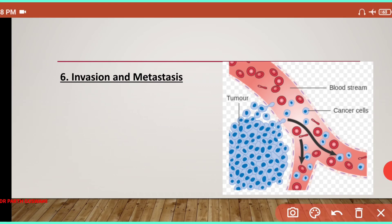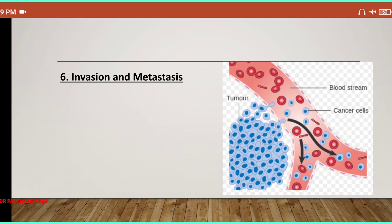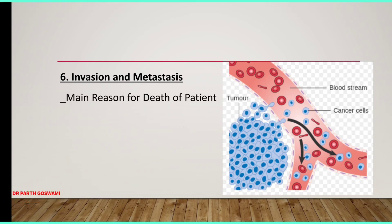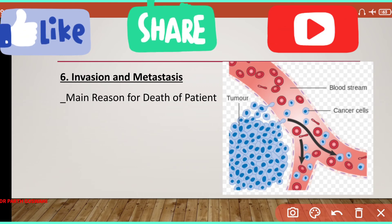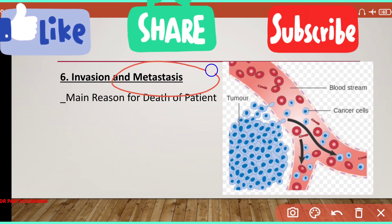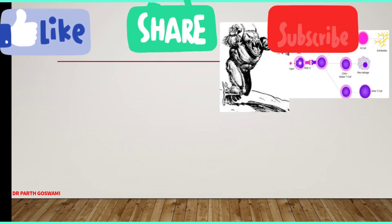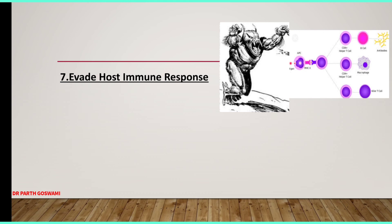The sixth mechanism of cancer formation is invasion and metastasis. Tumor cells penetrate into blood vessels — they break through the blood vessel basement membrane, enter the bloodstream, and through blood or lymphatic channels can reach other organs throughout the body. This is known as metastasis and is the main reason for patient death. I have already made a video on tumor spread — check the playlist.